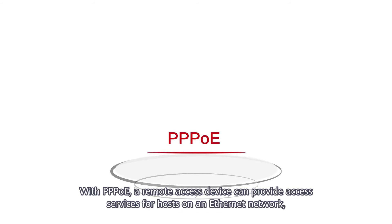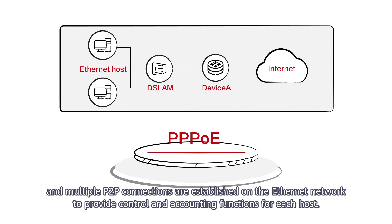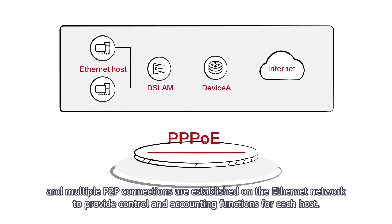With PPPoE, a remote access device can provide access services for hosts on an Ethernet network, and multiple P2P connections are established on the Ethernet network to provide control and accounting functions for each host.